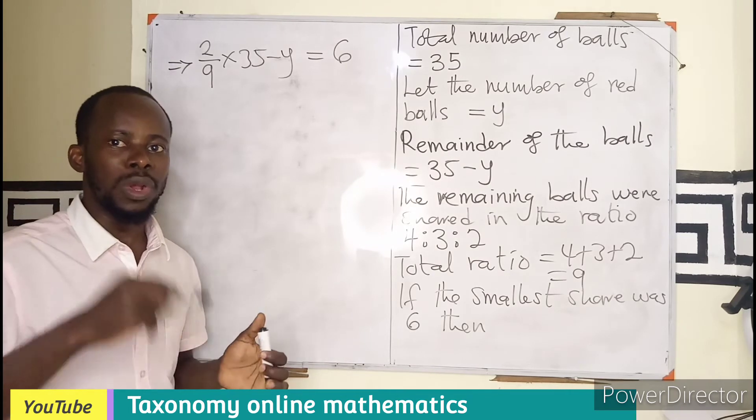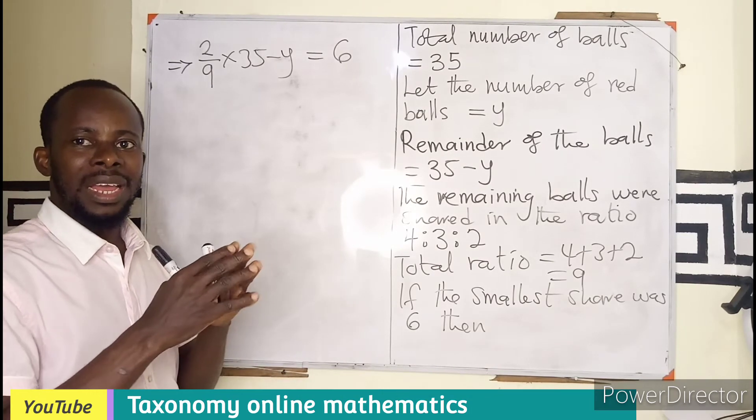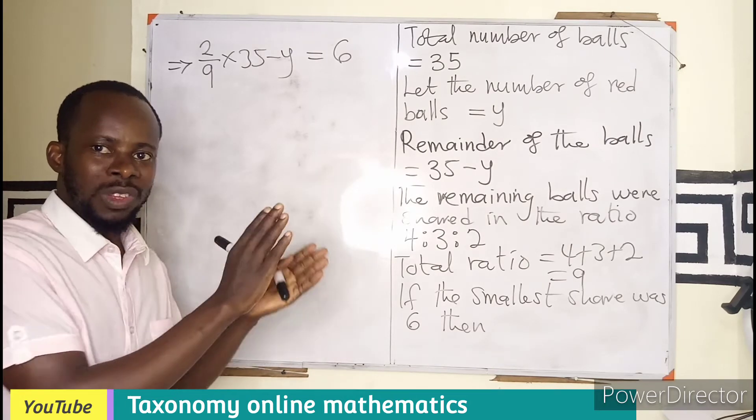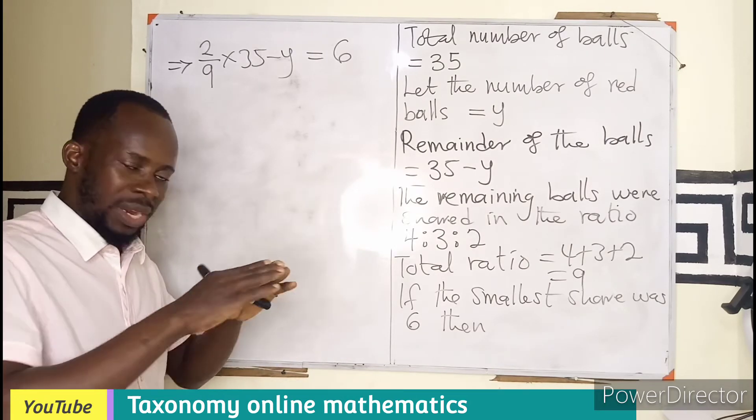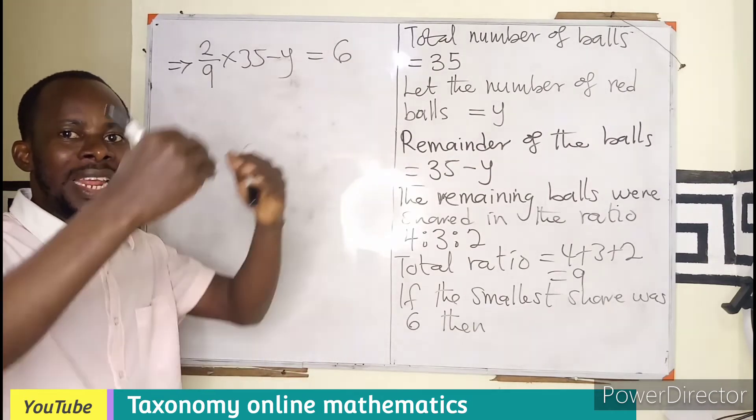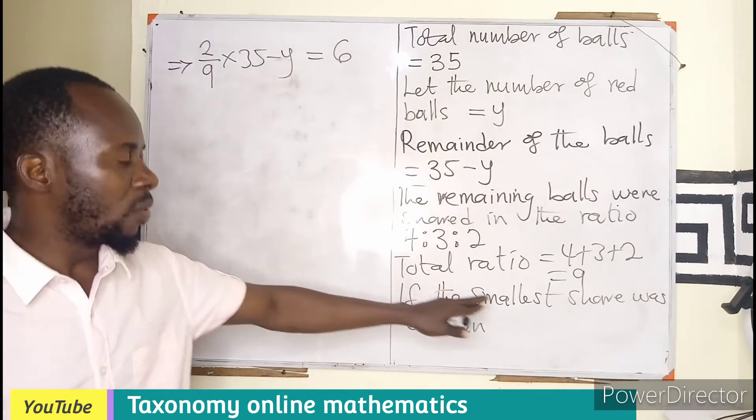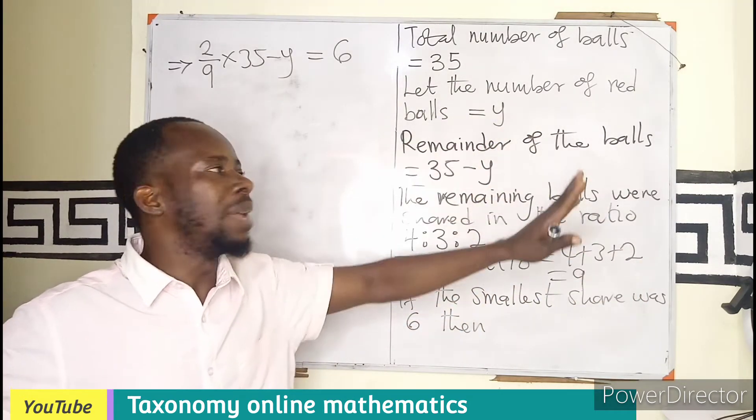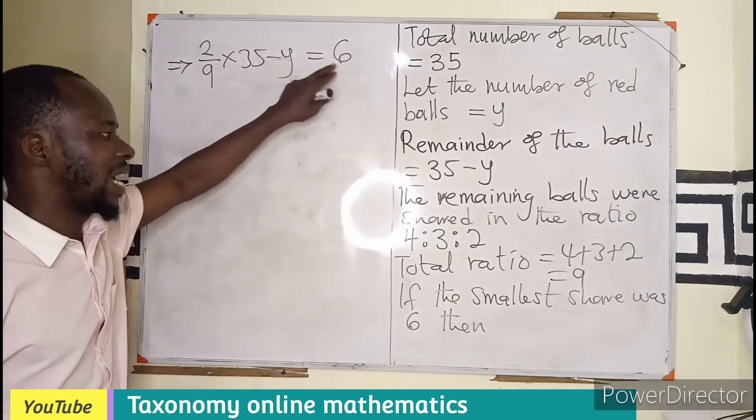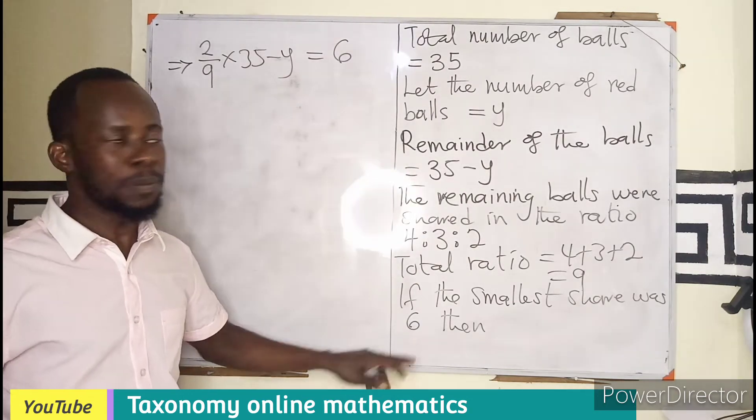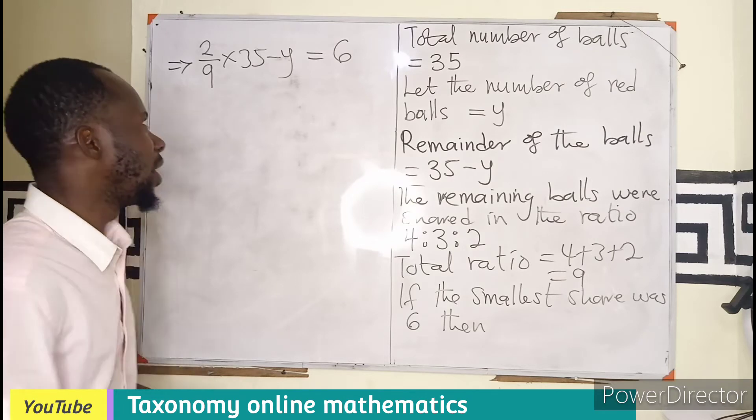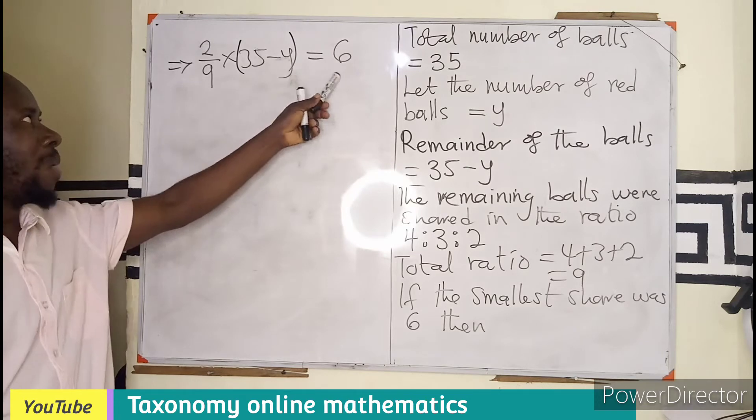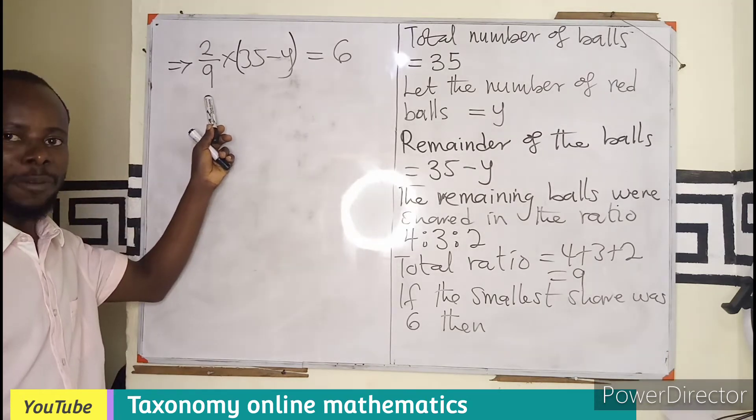You know in ratio, if you want to find the amount shared, it's going to be the ratio corresponding to the group divided by the total ratio times whatever they are to share. So the ratio for smallest will be 2 out of 9 groups times the amount they are to share. That will have given us 6. So this becomes a linear equation involving fraction. So we multiply through by the LCM which is 9.